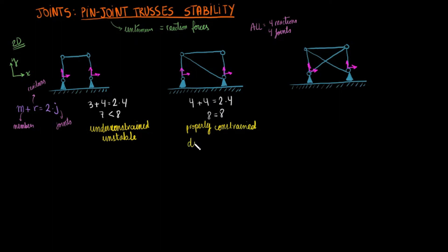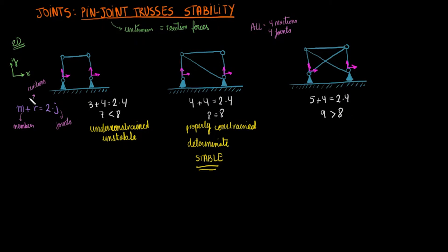This last system has five members. We end up with 9 greater than 8, such that we have more unknowns than we can solve for with the balance equations we have. We would need more equations to solve the system. Thus, the system is over-constrained or indeterminate.